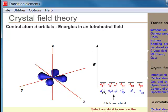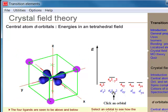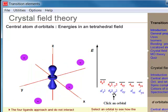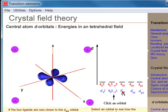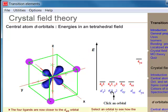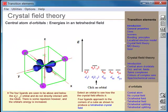In a tetrahedral crystal field, four ligands approach along opposite corners of a cube, forming a tetrahedral crystal field. In this case, the dxy, the dyz, and the dxz orbitals are raised in energy, whereas the dx-squared minus y-squared and dz-squared orbitals are lowered in energy.